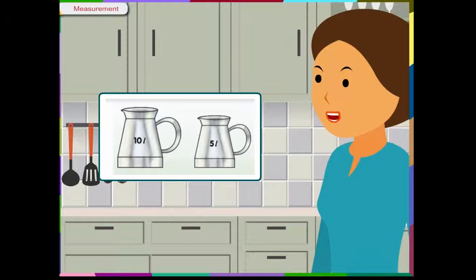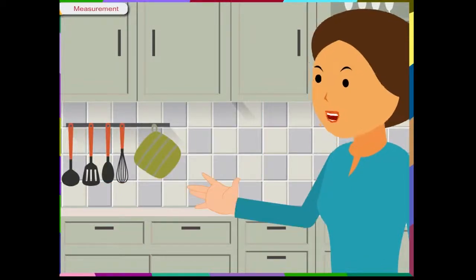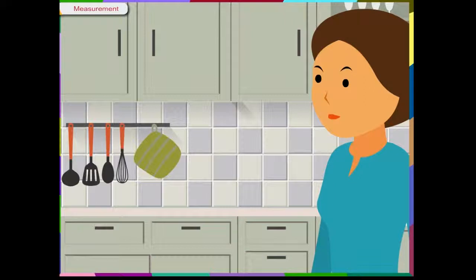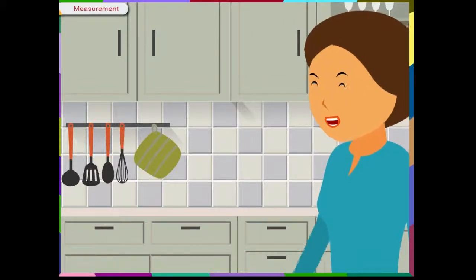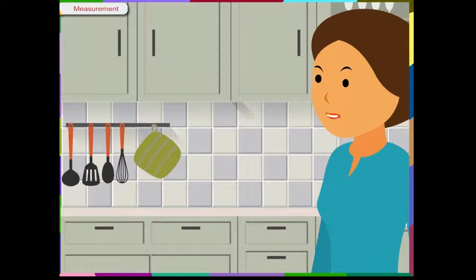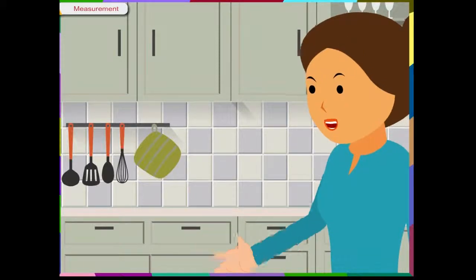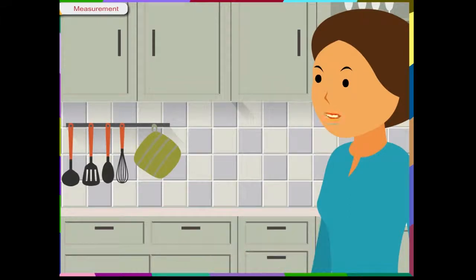We can say: One milk packet holds 1 litre of milk. One big tetra packet of juice contains 1 litre of juice. One big can of cooking oil will have 5 litres of oil. One teaspoon will hold about 5 ml of honey. One small cup will hold about 150 ml of tea. One glass will hold about 250 ml of milk or water.